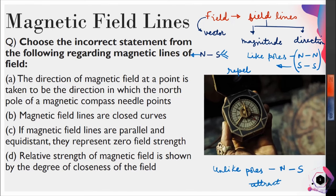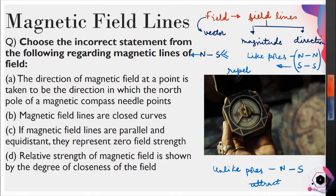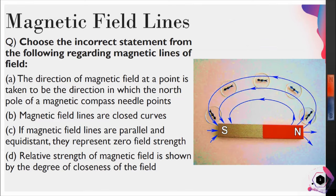Now let's see how to draw magnetic field lines. On screen you have a bar magnet — the red side is the north pole and the other side is the south pole. The blue lines are magnetic field lines, which are imaginary lines used for representation. To draw them we use a magnetic compass. If we keep a compass near the north pole, the compass's north pole pointer is repelled by the magnet's north pole.